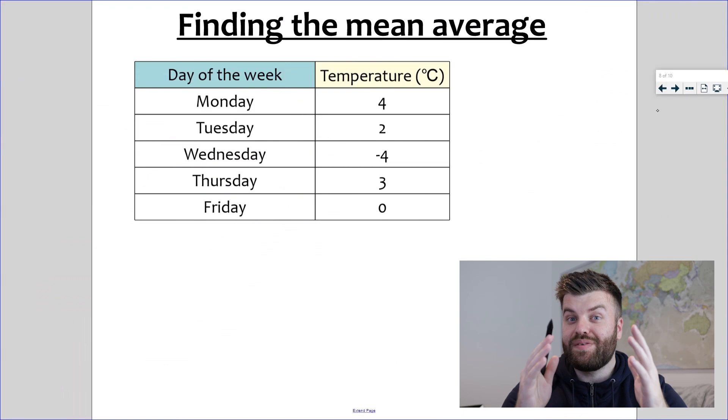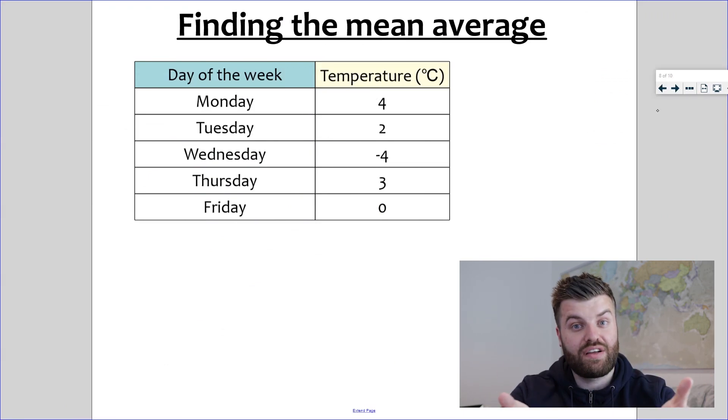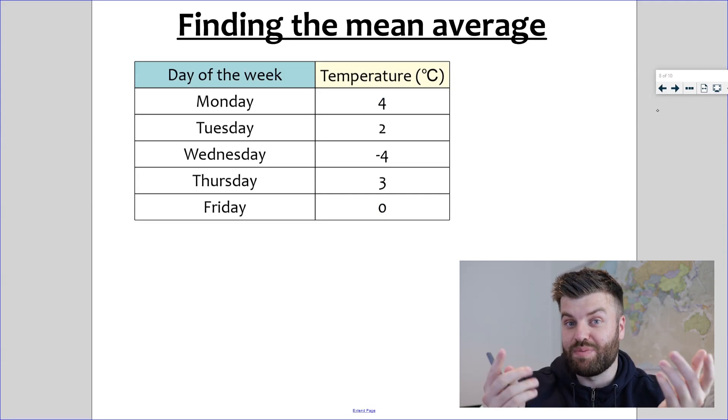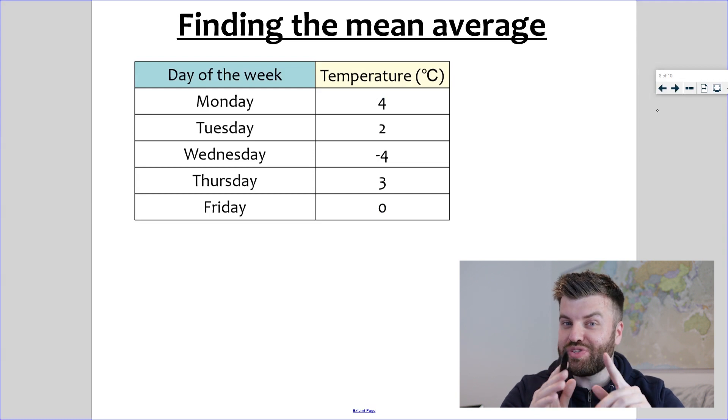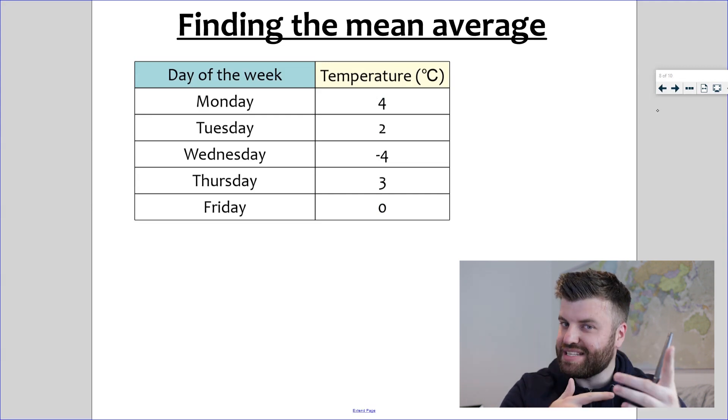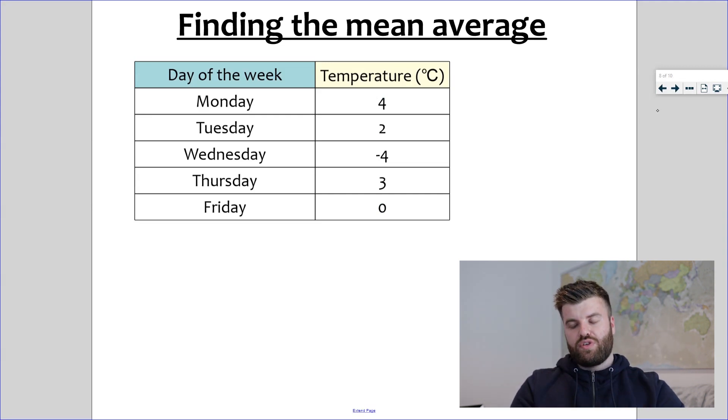Now this formula really does work for any set of data: large numbers, small numbers, but it also works for decimal numbers. And incredibly, it works for negative numbers. I just want to show you how to calculate the mean of a set of data that includes negative numbers because it can be quite tricky to get your head around.